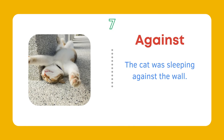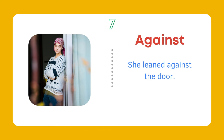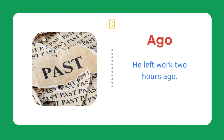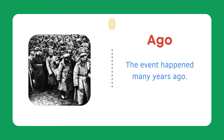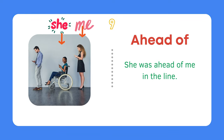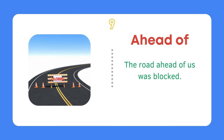Against. The cat was sleeping against the wall. She leaned against the door. Ago. He left work 2 hours ago. The event happened many years ago. Ahead of. She was ahead of me in the line. The road ahead of us was blocked.